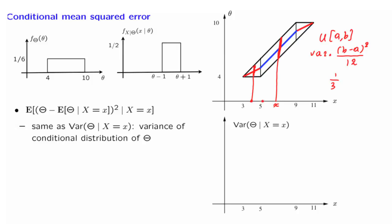When x is between 5 and 9, theta has a conditional distribution which is uniform on an interval of length 2 and a variance of 1/3. Therefore, the variance is constant and takes this value.